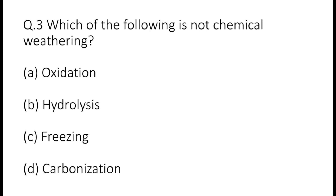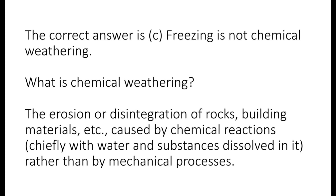Question 3: Which one of the following is not chemical weathering? Options are A: oxidation, B: hydrolysis, C: freezing, or D: carbonization. The correct answer is C — freezing is not chemical weathering. The erosion or disintegration of rocks, buildings, and materials caused by chemical reactions, chiefly with water and substances dissolved in it rather than by mechanical processes, is known as chemical weathering.